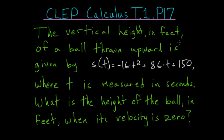The vertical height in feet of a ball thrown upward is given by s(t) = -16t² + 86t + 150, where t is measured in seconds. What is the height of the ball in feet when its velocity is zero?